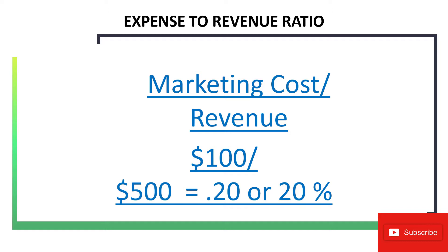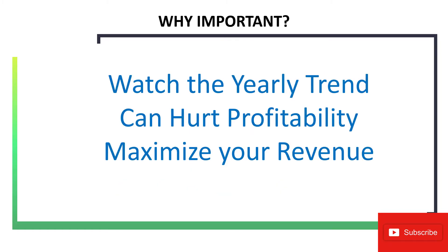The key factors in why the expense-to-revenue ratio is important: you want to watch your yearly trends to see if it's going up or down. If your number is going up, that means it's hurting your profitability — you're not being as efficient with your advertising spend. Also, keep an eye on your overall revenue, because if your number is holding steady, it may mean that spending more on advertising or marketing could increase your total revenue. You want to keep an eye on the year-over-year trend.